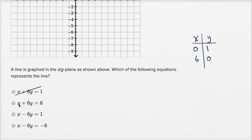When x is equal to zero, y needs to be equal to one. If x is zero, then six y equals six. Yeah, y is going to be equal to one. Now when y is zero, x needs to be equal to six. So if y is zero, this goes away and x is equal to six. So we're done. This is our choice.